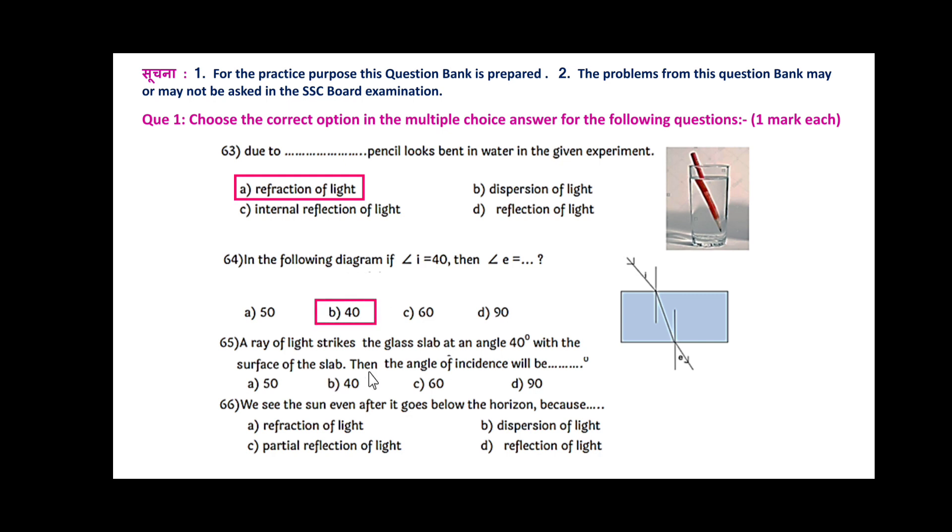Next, a ray of light strikes the glass slab at an angle of 40 degrees with the surface of the slab. Then the angle of incidence will be... Here it is given 40 with the surface of the glass. The angle with the normal will be 90. The value of 40 is given, the rest angle will be 50. We see the sun even after it goes below the horizon because of refraction of light.